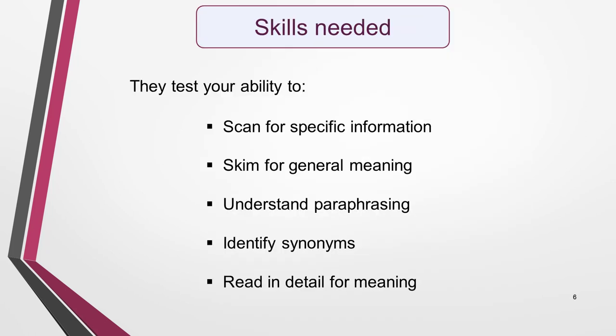Table completion questions test your ability in a range of reading skills. You need to be able to scan for specific information, skim for general meaning, understand paraphrasing, identify synonyms, and read in detail for meaning. The information in the table or flowchart will match information in the text, but it will very likely be paraphrased and include synonyms. Once you've located where in the text the answer is, you'll need to interpret the language to identify the word or words you need to fill the gaps in the table or flowchart.